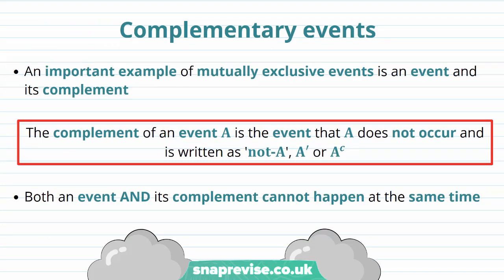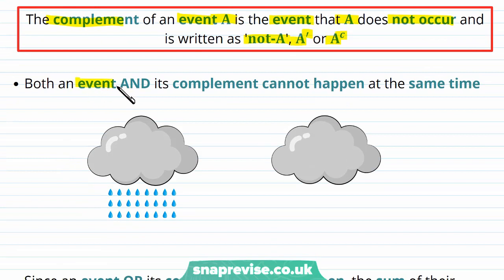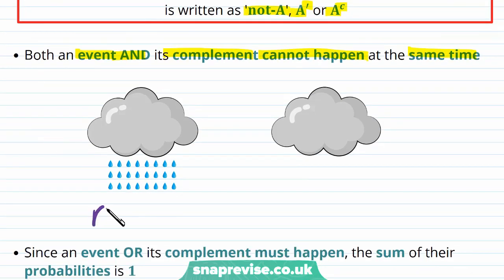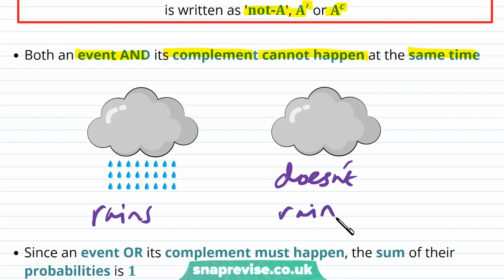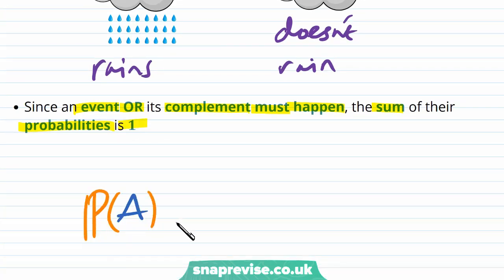So what exactly are complementary events? An important example of mutually exclusive events is an event and its complement. The complement of an event A is the event that A does not occur, written as not A, A with a dash, or A with a little c. Both an event and its complement cannot happen at the same time. Since an event or its complement must happen, the sum of their probabilities is one: P(A) plus P(A complement) equals one.